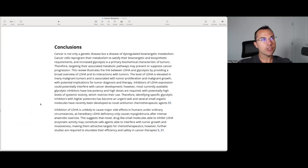In conclusion, cancer is not only a genetic disease, but a disease of dysregulated bioenergetic metabolism. Cancer cells reprogram their metabolism to satisfy their bioenergetic and biosynthetic requirements and increase glycolysis as a primary biochemical characteristic of tumors. Therefore, targeting their associated metabolic pathways may prevent or suppress cancer progression. This review illustrates the link between LDHA, lactate dehydrogenase A, and glycolysis by providing a broad overview of LDHA and its interactions with tumors. The level of LDHA is elevated in many malignant tumors and associated with tumor proliferation and malignant growth with potential implications for tumor diagnosis and therapy.